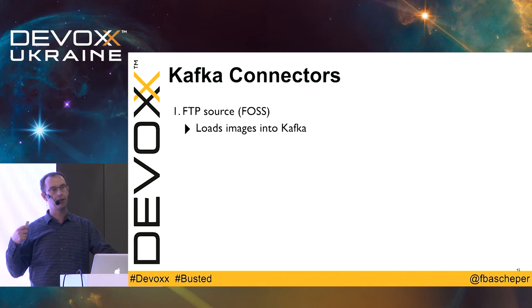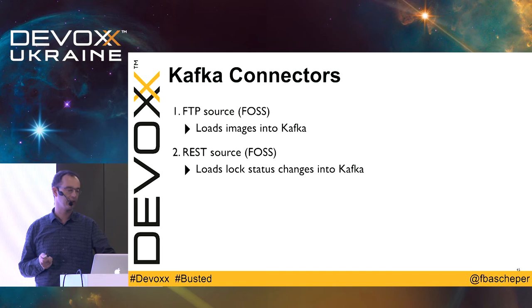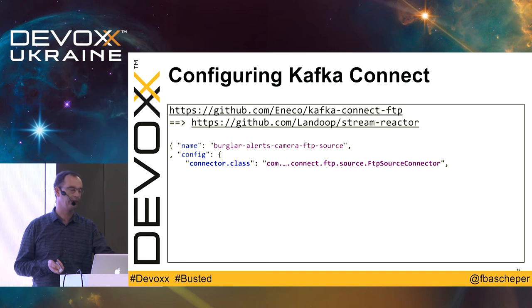I'm using three connectors. The first is the FTP source — since the camera uploads via FTP, I can download it again using FTP. This connector was made by Eneco, an energy company in the Netherlands now owned by Vattenfall. The second is the REST source connector, which connects to the Nuki API to get lock information. The third is a Telegram sink, which I developed for this project — this one actually sends the burglar alerts.